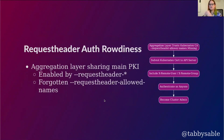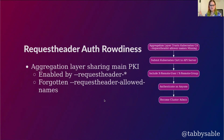How this attack is going to work depends on a little setup. In this cluster, the aggregation layer trusts the same CA as the main Kubernetes API server. And the command line argument request-header-allowed-names is missing on the API server. This means that right now, any Kubernetes client cert can pass the appropriate HTTP headers to enable front proxy authentication. So that's what we're going to do — submit our Kubernetes user cert to the API server including the appropriate headers, which will allow us to authenticate as anyone and become cluster admin.